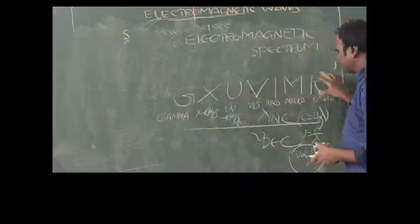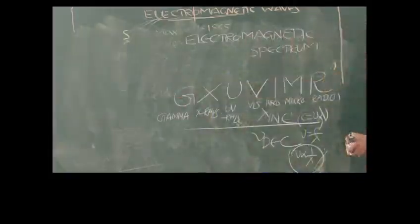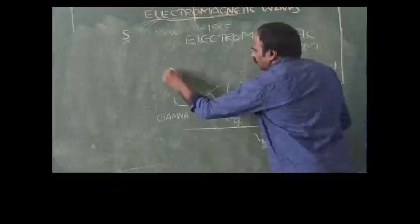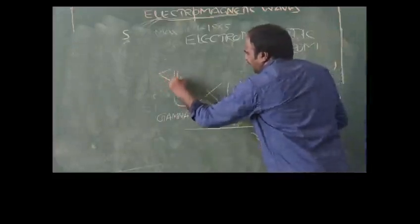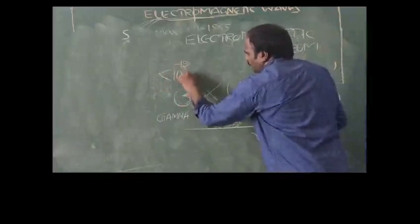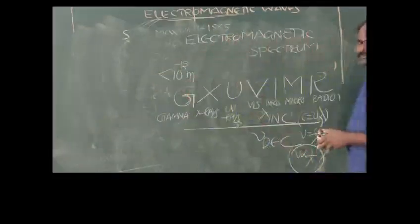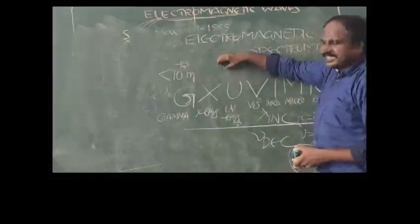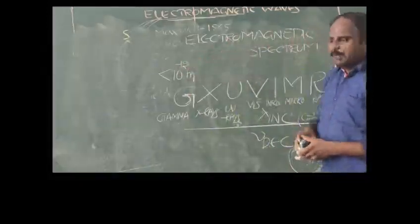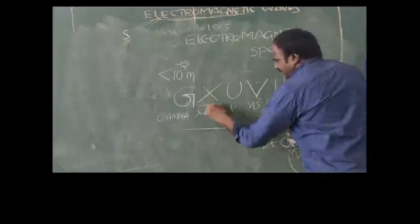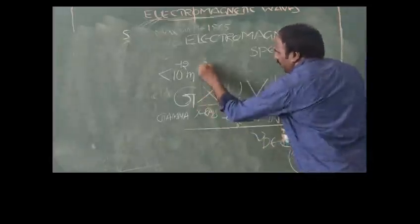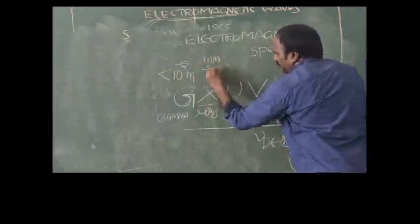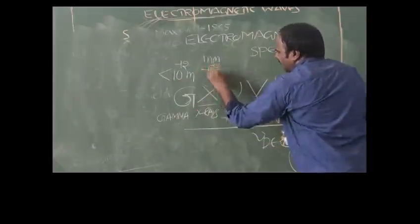Going from gamma to radio, wavelength increases. Gamma rays have wavelength less than 10⁻¹² meters. For X-rays, the wavelength range is 1 nanometer to 10⁻¹² meters — note that the last value of gamma becomes the boundary for X-rays.